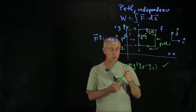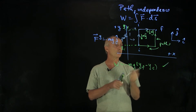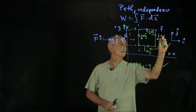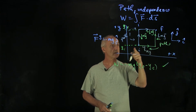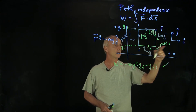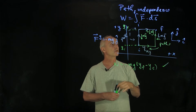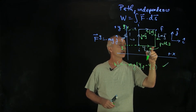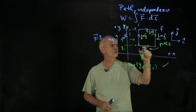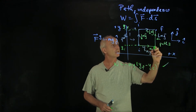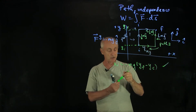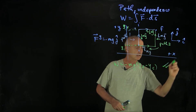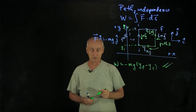On path two, let's draw our forces: gravity down on both legs. On the first horizontal leg of path two, this integral is zero because the object is moving perpendicular to the force along the path. And on the vertical leg, just as on path one, the gravitational force is down, the integral is negative, and we get exactly the same result.